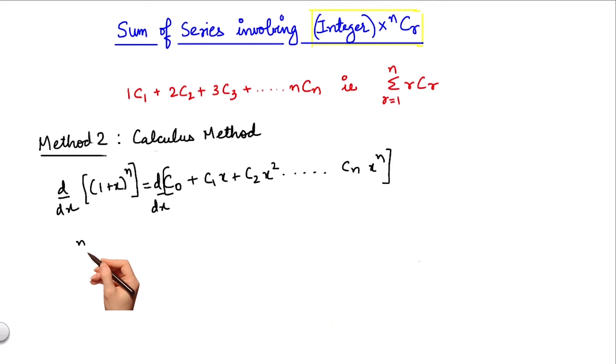On the left hand side, I get n times (1+x)^(n-1). And on the right hand side, the coefficient c0 becomes 0, and then I get c1 plus 2 times c2x plus 3 times c3x² and so on until n times cn x^(n-1).